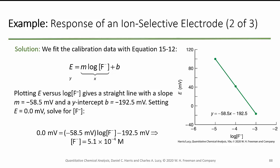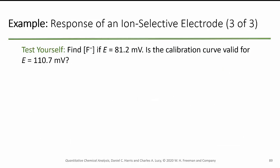We fit the calibration with an equation: Y = M × log[fluoride] + B, a Y = MX + B equation. Plotting potential versus log of fluoride gives a straight line with a slope of minus 58.5 millivolts and a Y-intercept of minus 192 millivolts. Setting E equal to zero and solving for F, we end up with 5.1×10⁻⁴ M — somewhere between 10⁻⁴ and 10⁻³. See if you can do the same with a cell potential of 81.2 millivolts, and ask yourself whether it is still valid for 110 millivolts — that's up here outside our calibrated range.